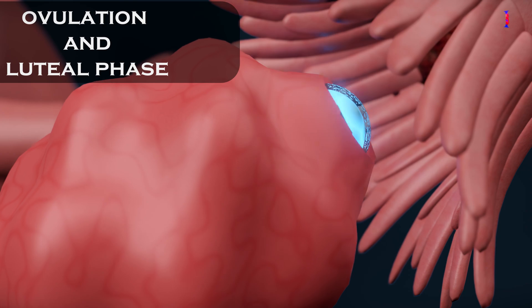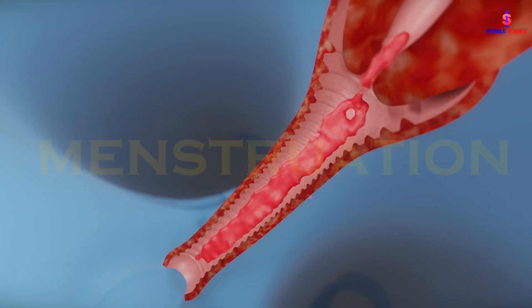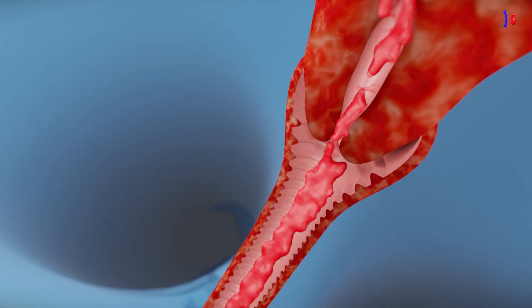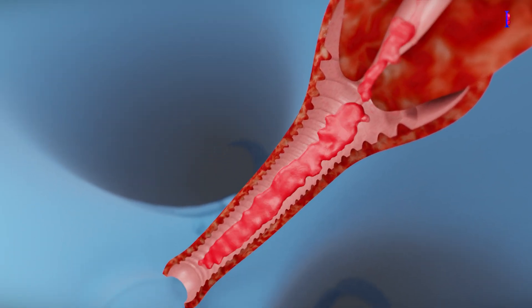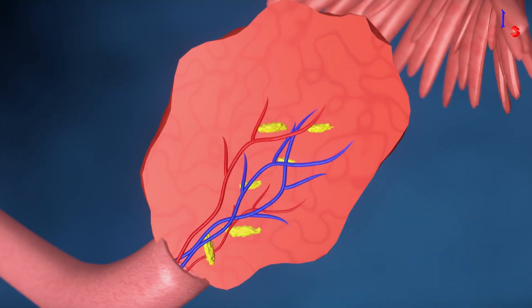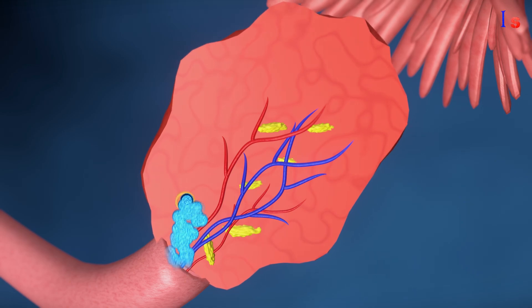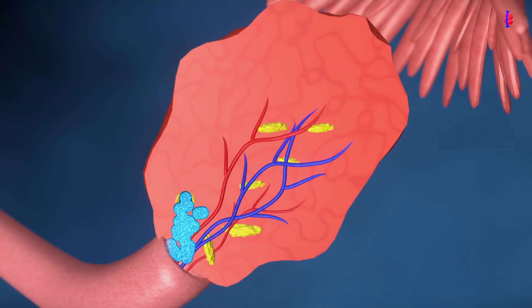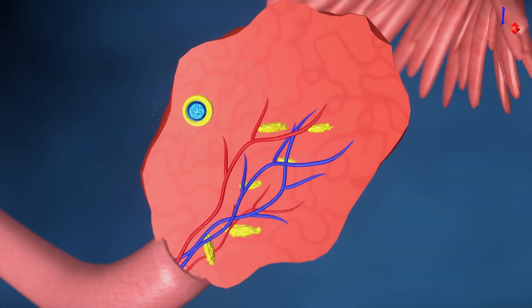Let's start with menstruation. During menstruation, the lining of the uterus sheds, and this results in bleeding. It usually lasts for a few days. Meanwhile, in the ovaries, follicles containing immature eggs start to develop in preparation for ovulation.